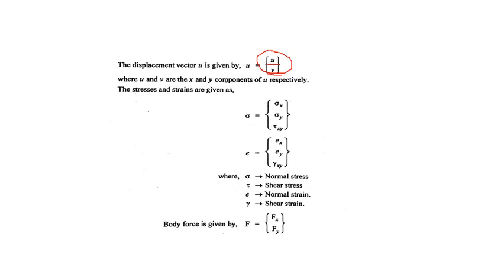The stresses and strains are given as sigma representing stress and e representing strain. Sigma is a column matrix: sigma_x, sigma_y, tau_xy — where sigma_x is the normal stress in the x direction, sigma_y is the normal stress in the y direction, and tau_xy is the shear stress in the xy plane. Remember, in one-dimensional analysis only sigma was there, but in two-dimensional analysis we have three stresses. Correspondingly, strain epsilon equals [ex, ey, gamma_xy], where ex is normal strain in x, ey is normal strain in y, gamma_xy is the shear strain in the xy plane, and the body force f is given by [fx, fy].